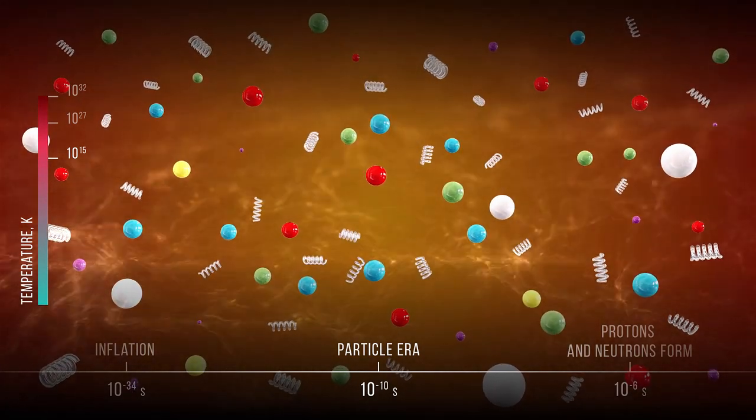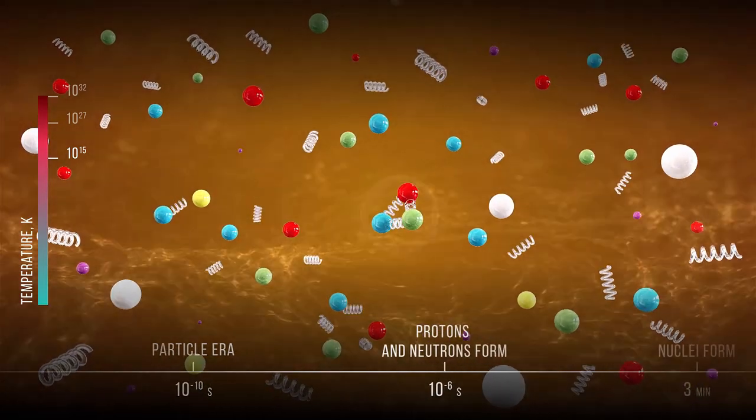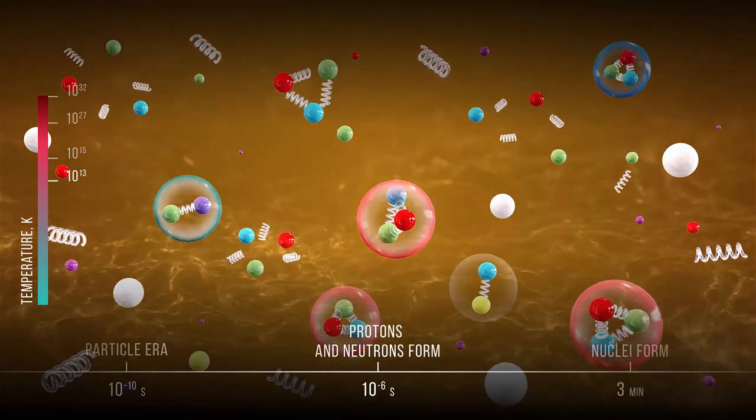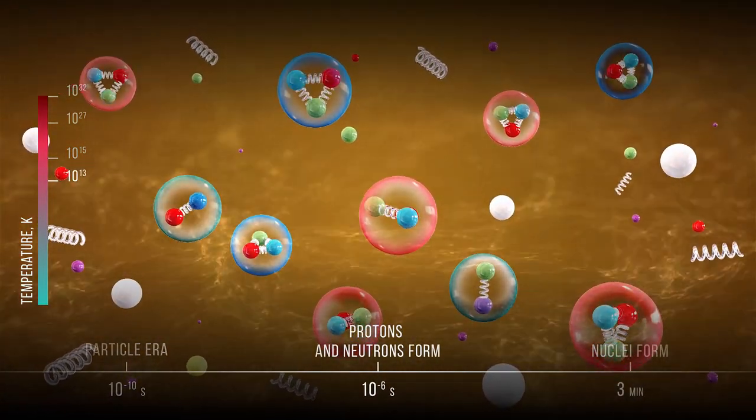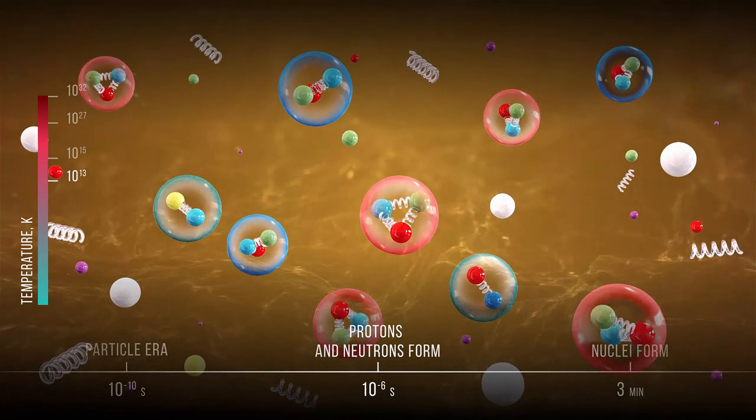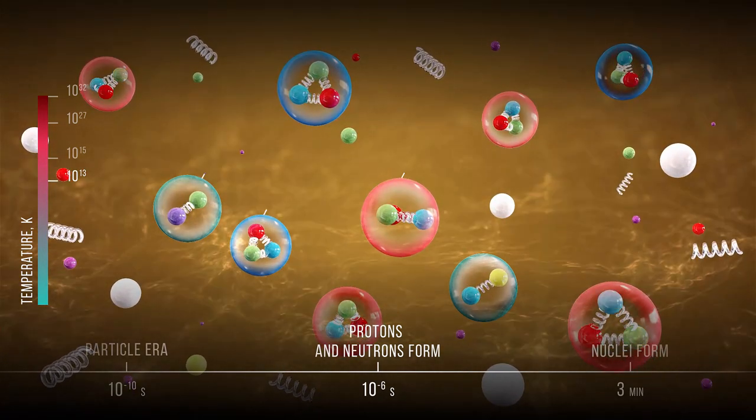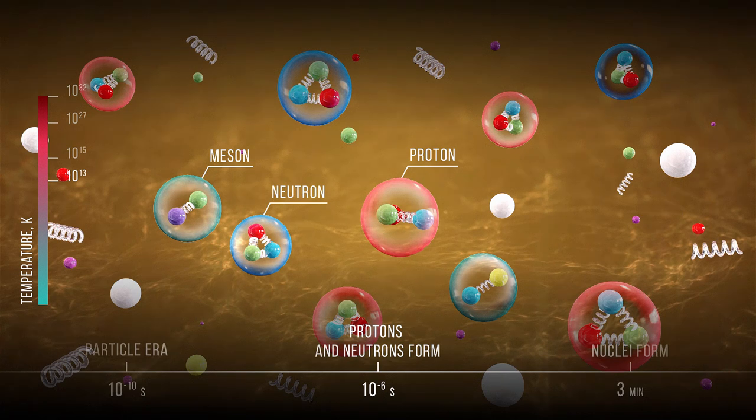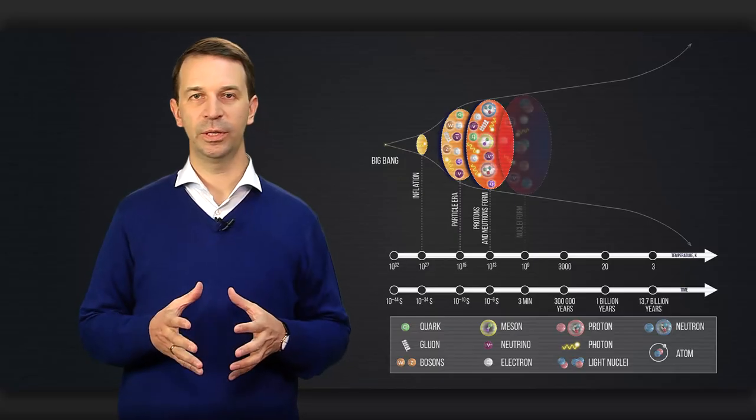Later, while the universe was expanding and cooling, protons and neutrons began to form. Quarks, according to some laws we are currently unaware of, were grouped into pairs and triplets, forming protons, neutrons, and mesons.